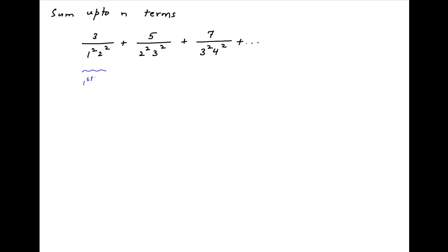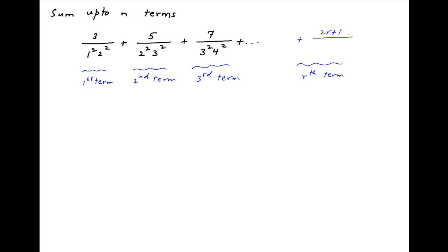The first term of the series is 3 upon 1² times 2². The second term is 5 upon 2² times 3². The third term is 7 upon 3² times 4². Note the pattern here that allows us to write the rth term of the series, which is 2r plus 1 in the numerator and r² times (r+1)² in the denominator.